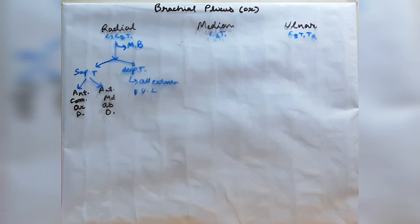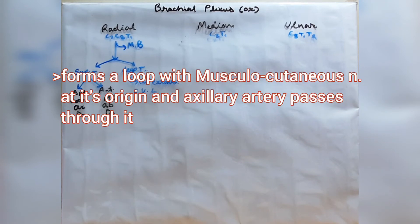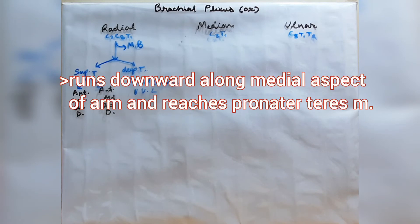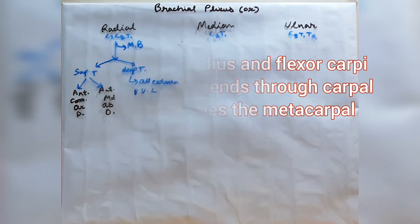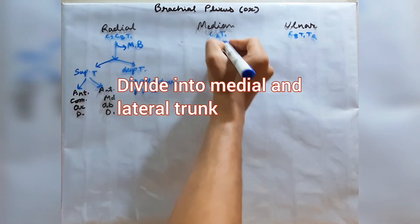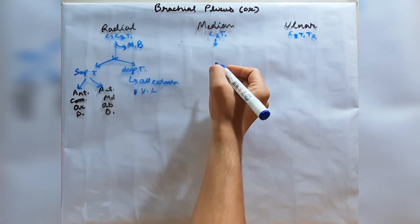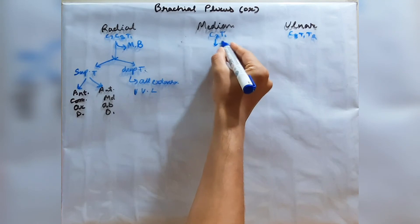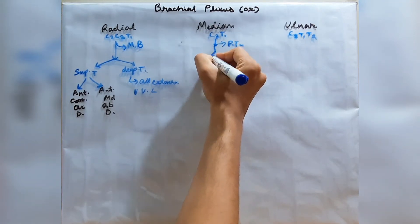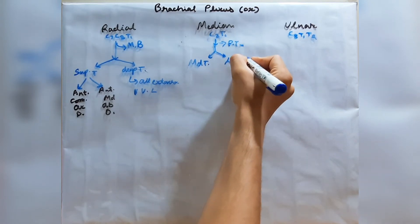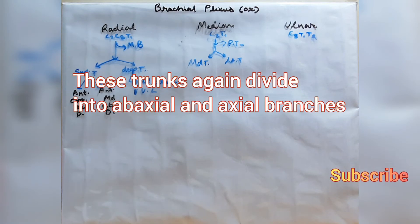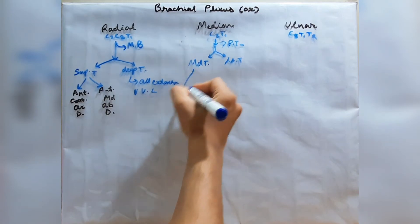The median nerve is formed from C8 and T1. It forms a loop with the musculocutaneous nerve at its origin, through which the axillary artery passes. It then runs downward along the medial aspect of the arm, reaches the pronator teres muscle and innervates it, passes between the radius and flexor carpi radialis, descends through the carpal sheath, and reaches the metacarpus where it divides into a medial trunk and a lateral trunk. Both trunks further divide into abaxial and axial branches.